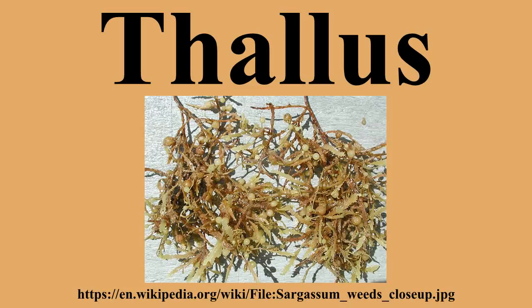Even though thalli do not have organized and distinct parts as do vascular plants, they may have analogous structures that resemble vascular equivalents. The analogous structures have similar function but a different microscopic structure. For example, no thallus has vascular tissue. In exceptional cases such as the lemnoid, where the structure of a vascular plant is in fact thallus-like, it is referred to as having a thalloid structure.